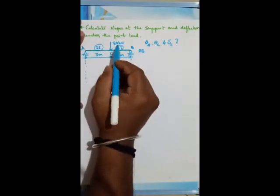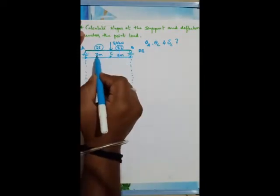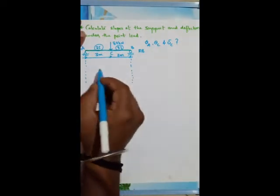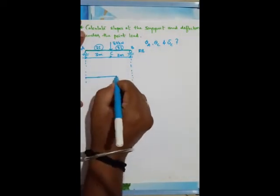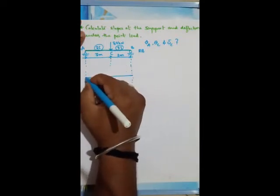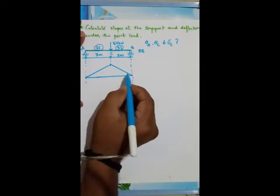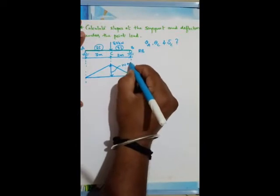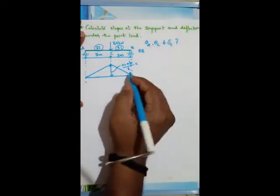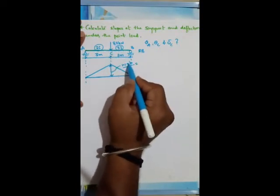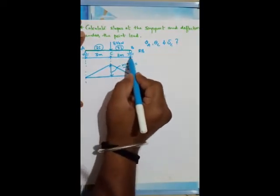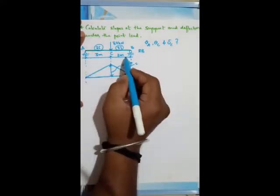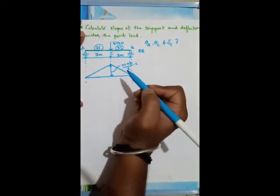The simply supported beam is subjected to a concentrated load at a distance A and B. It is not a symmetrical load. You are aware about this standard loading — the variation of bending moment and what will be the maximum bending moment. It is W·A·B/L, where W is the concentrated load. So here A is 3 meters, B is 2 meters, and first you need to calculate reactions Ra and Rb.